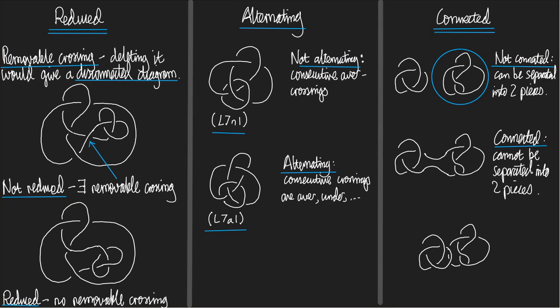However, if I start with a diagram that's not alternating, there's possibly nothing I can do to make it alternating. Put another way, there are knots and links that have no alternating diagram. This second example we see is one of them — it has no alternating diagram — and we're going to see ways to show that kind of fact.